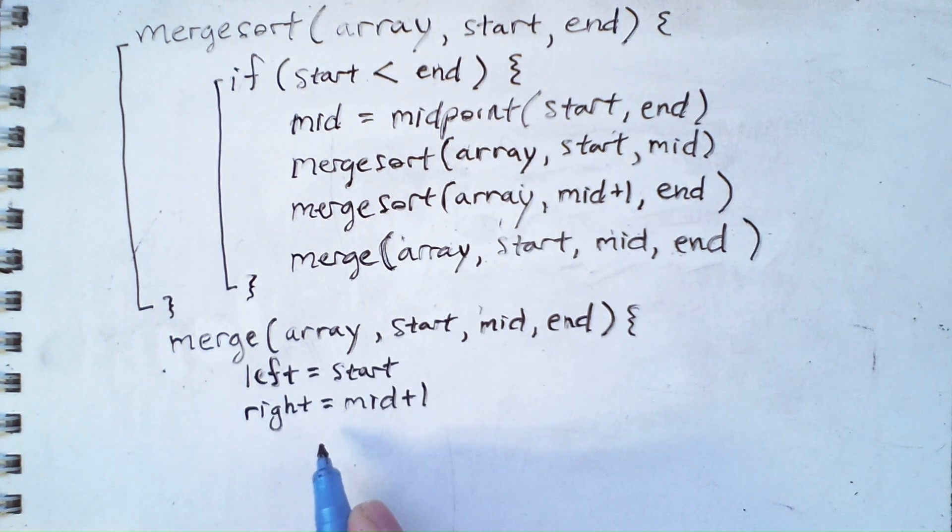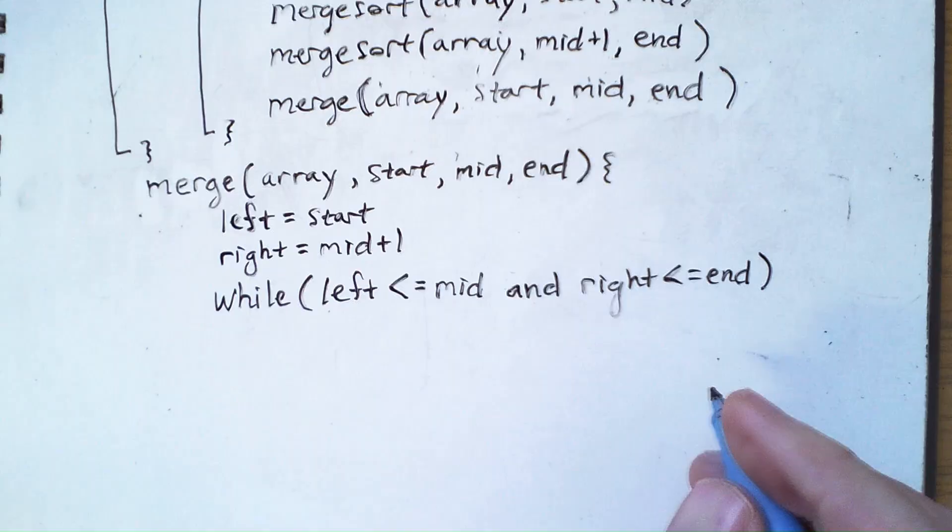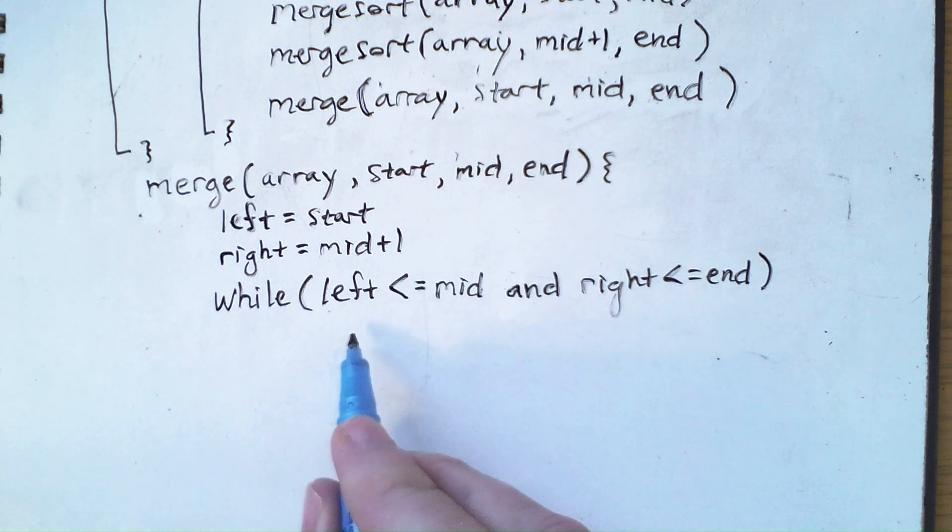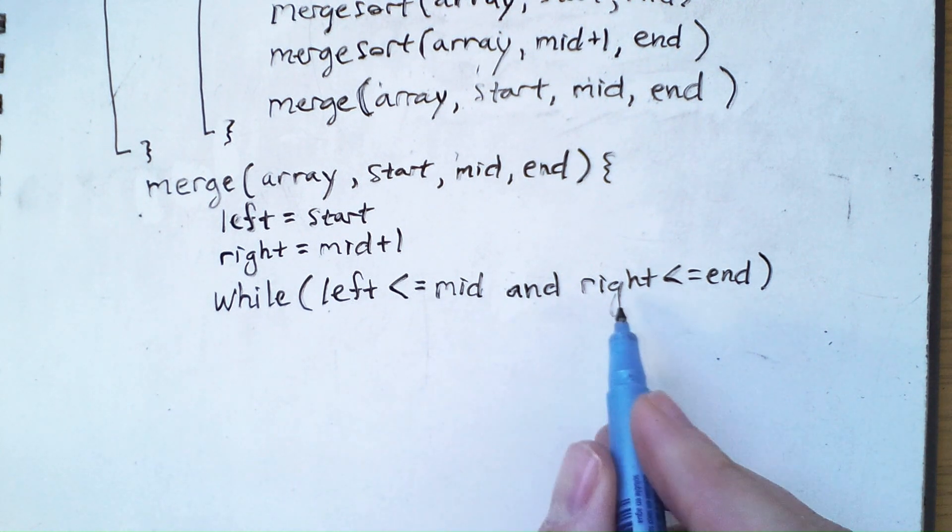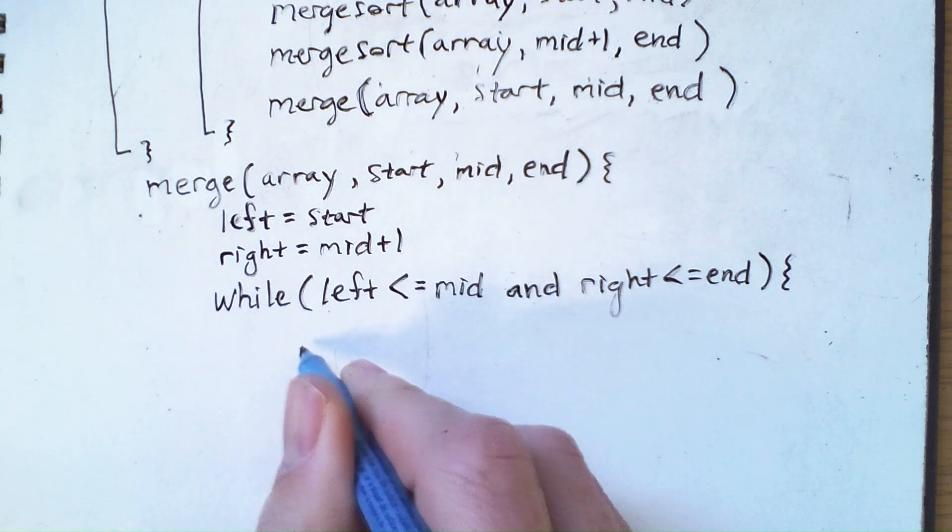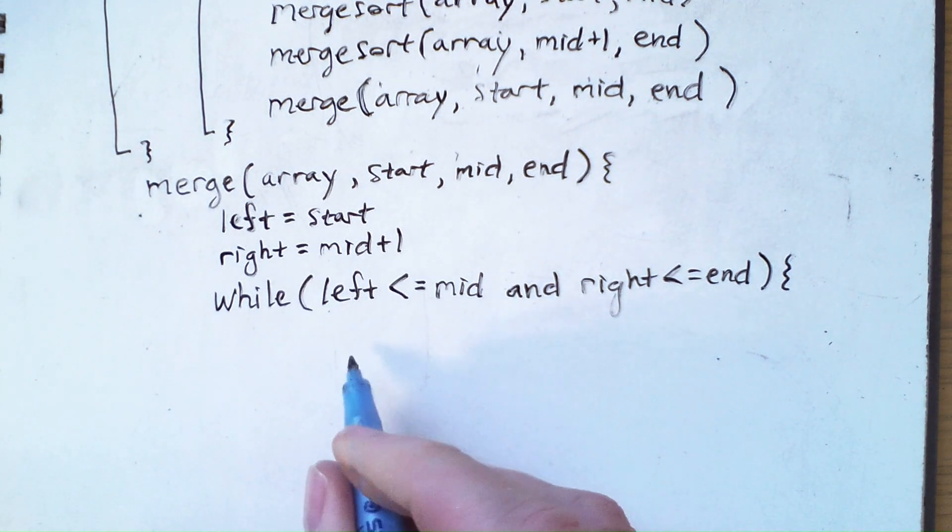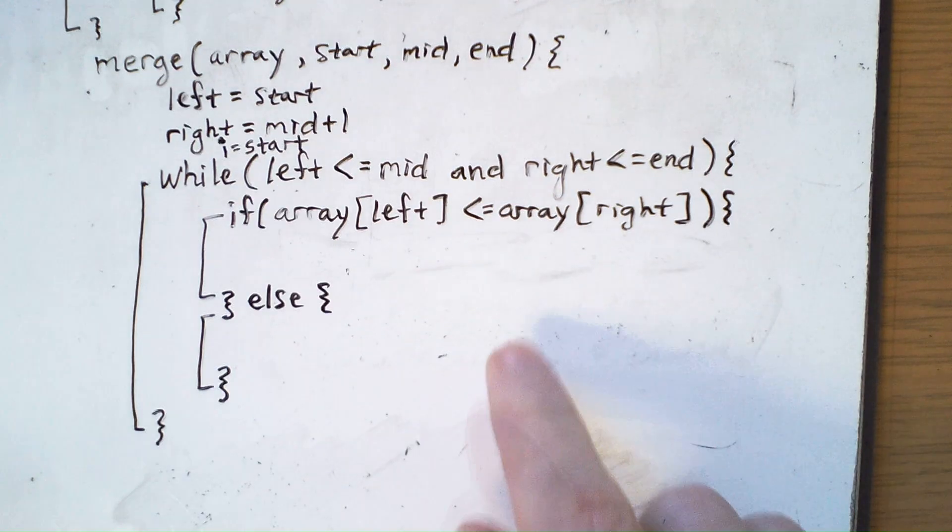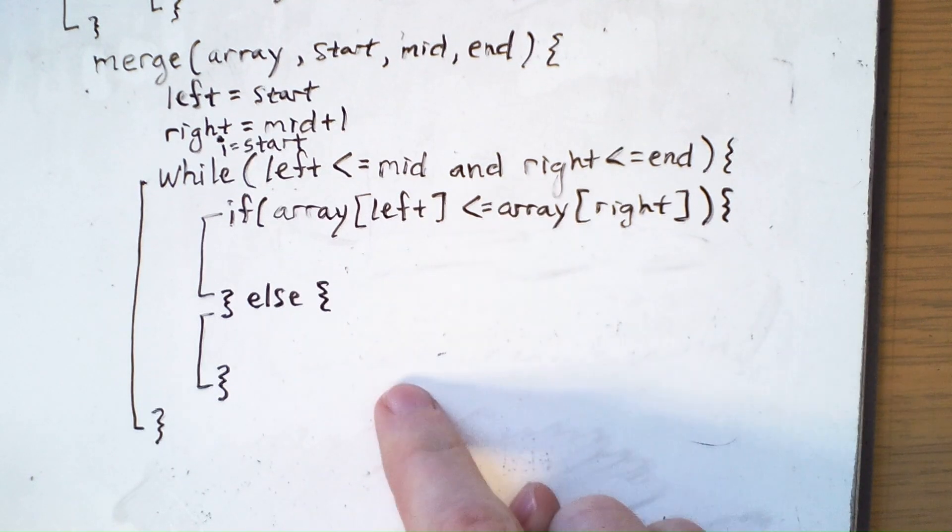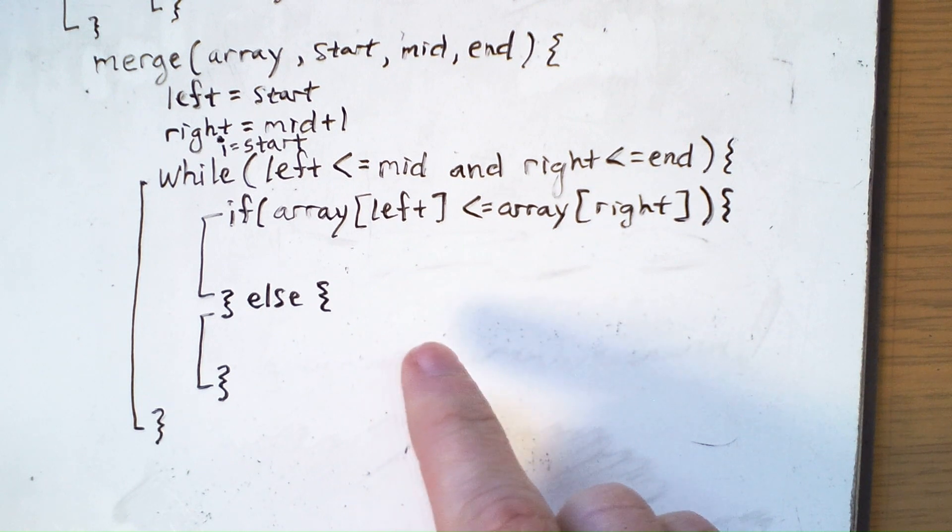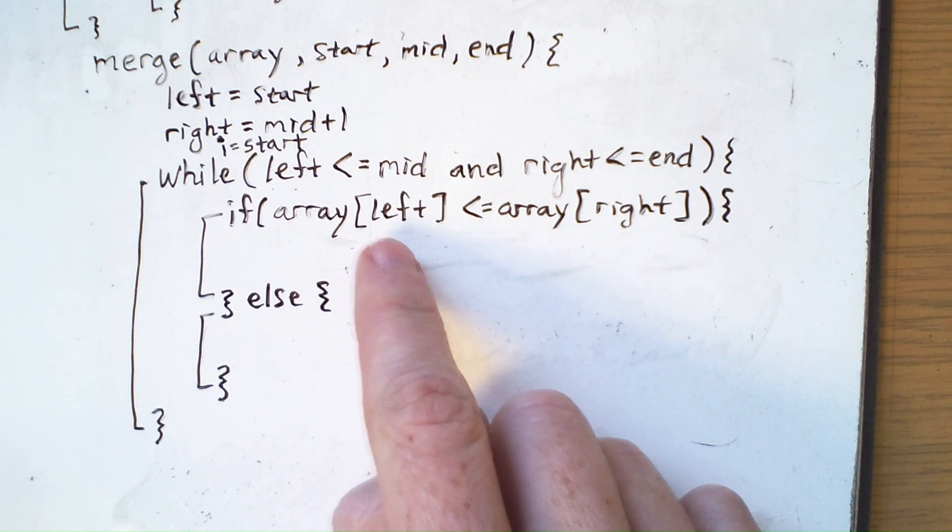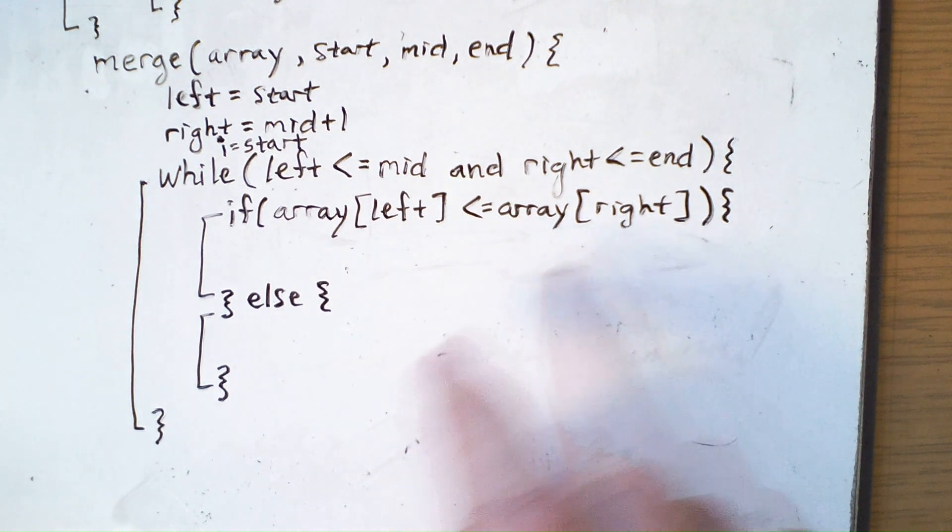So these are the starting indexes of each subregion. We'll loop as long as either of the two indices are in bounds. So left will go up to mid, and right will go up to end. And at each step of the way, we have to compare the values of these indices. Now, the question is, what do I do in each of these cases? I want to copy from the left subarray whenever that left value is less than or equal to the value on the right.